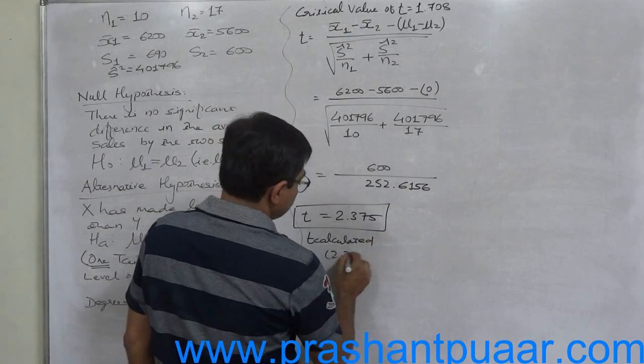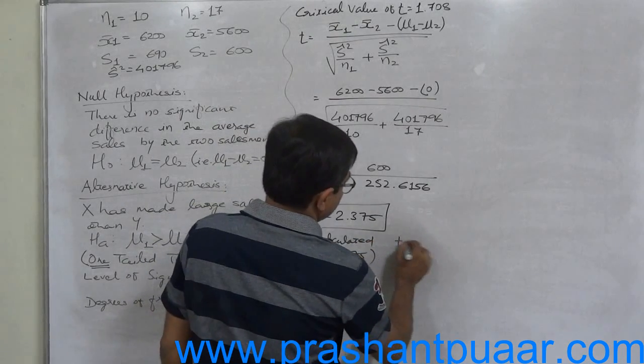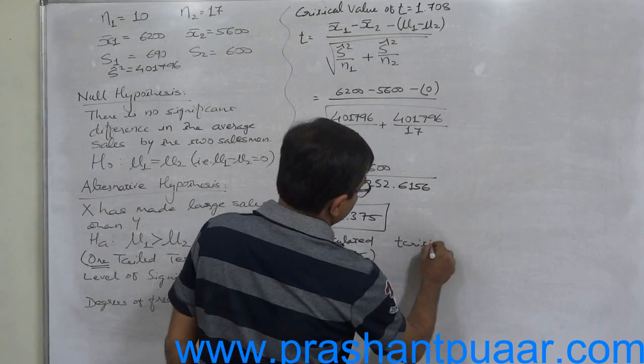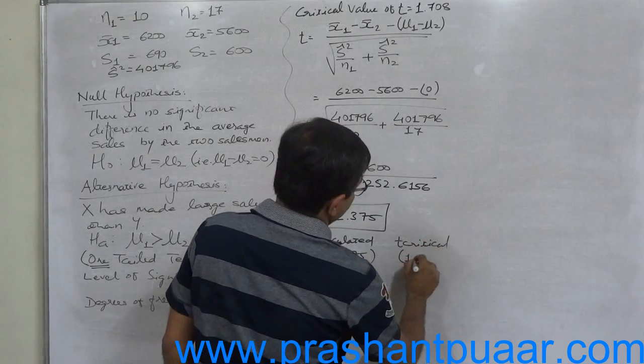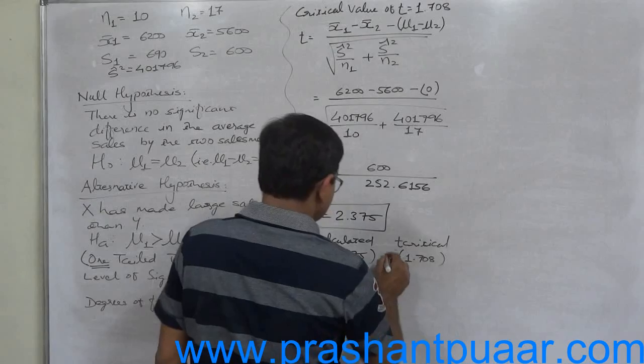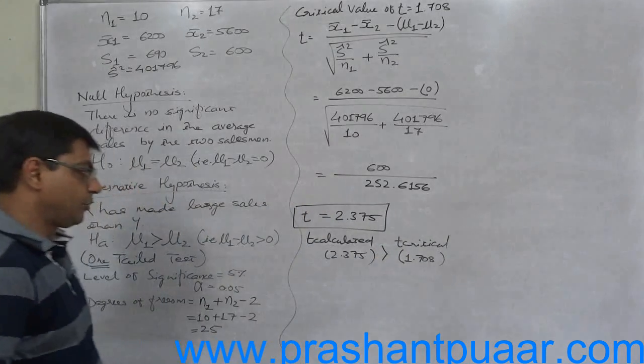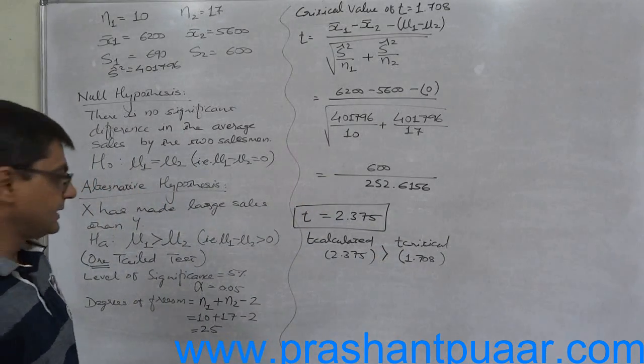T critical is 1.708. T calculated is positive and it is something more than 2. T calculated is greater than t critical.